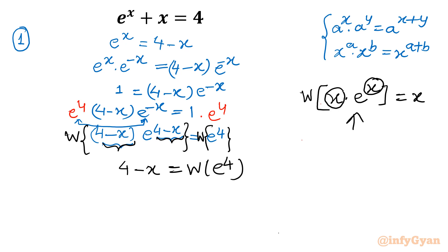So if you will calculate Lambert W of e raised to the power 4, then this value is 2.9262. Okay. Let us find out x. So x will be equal to 1.0738. I am writing 04 directly. Now question arises: Is this the only solution? x equal to 1.074, is this the only solution?